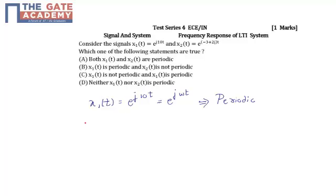Now taking the other signal, x₂(t) = e^((-3+2j)t), which is nothing but e^(-3t) × e^(j2t).